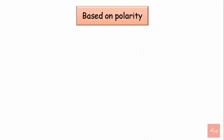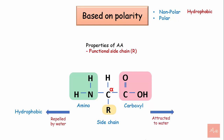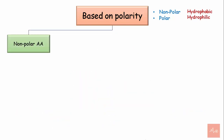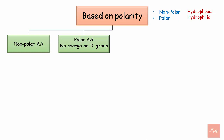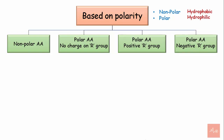Based on polarity, amino acids can be classified as polar or nonpolar. The properties of an amino acid depend on its functional side chain. Those that are repelled by water are called hydrophobic or nonpolar, and those that are attracted to water are called hydrophilic or polar amino acids. Based on polarity, we have: nonpolar amino acids, polar amino acids with no charge on the side chain, polar amino acids with a positive charge, and polar amino acids with a negative charge.